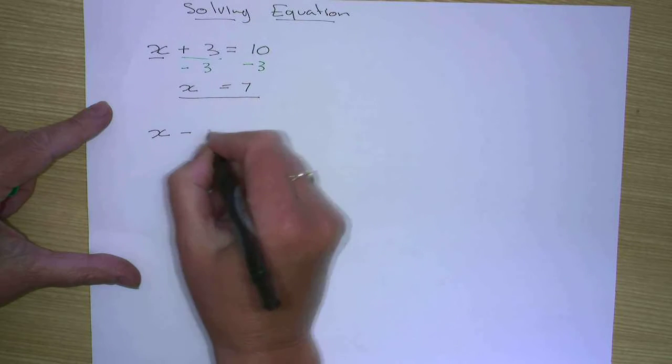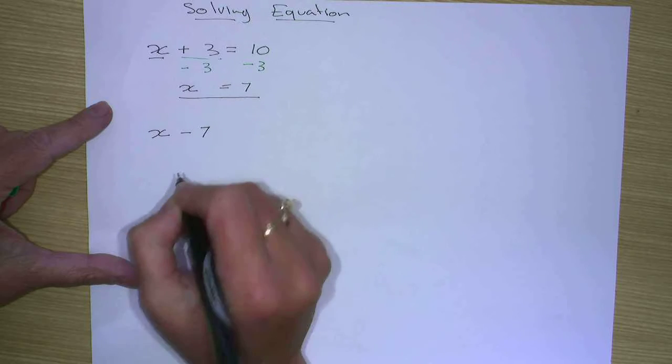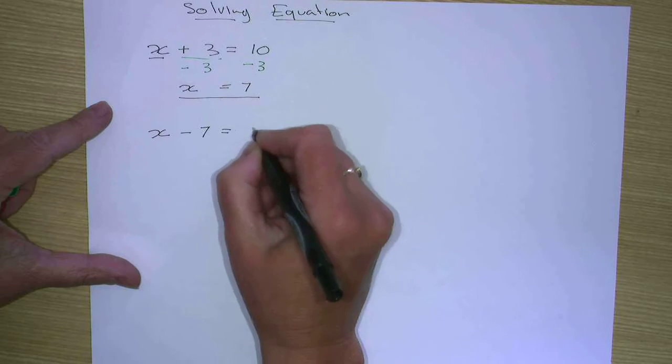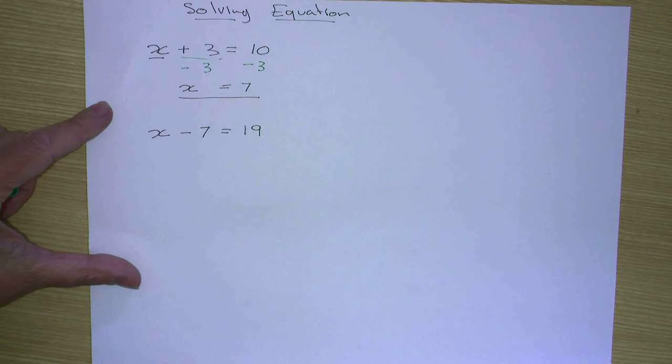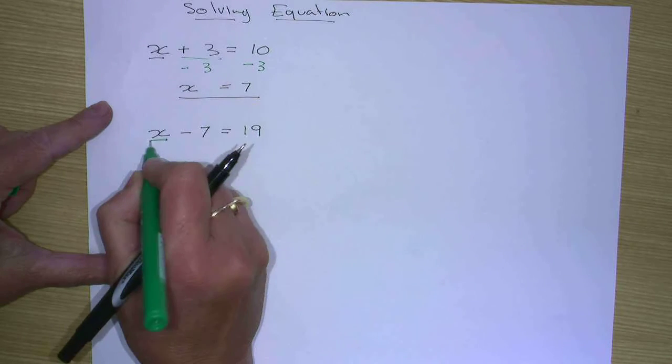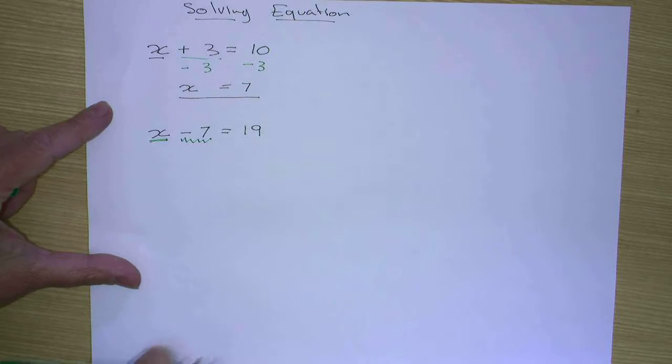Similarly, for an equation with a minus in it, we still want to find out what our x is equal to. So we need to get rid of this minus 7.